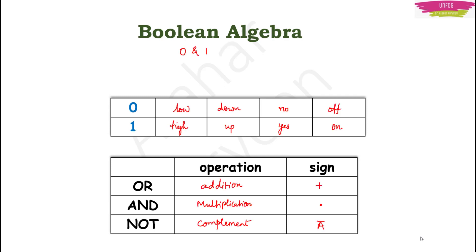This 0 and 1 — you call 0 as low, down, no or off. These are all the words you use for 0. And for 1, you say high, up, yes or on. So 0 and 1 means either low/high, down/up, no/yes, or off/on. That is what 0 and 1 mean.